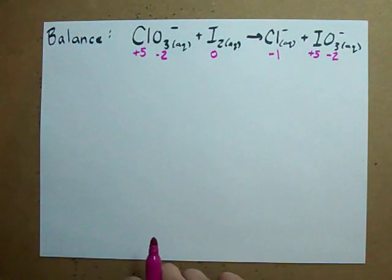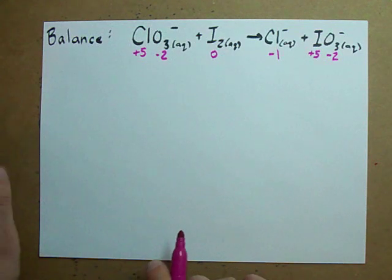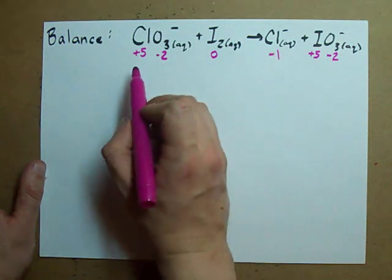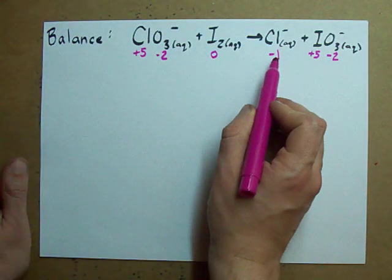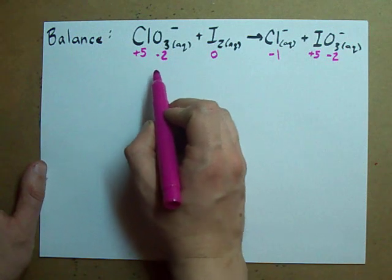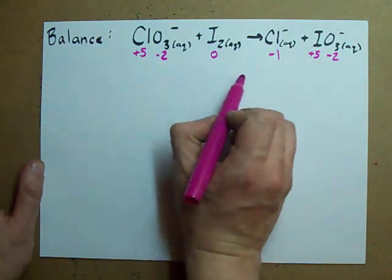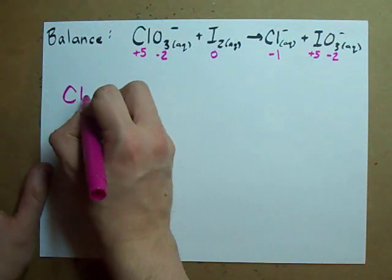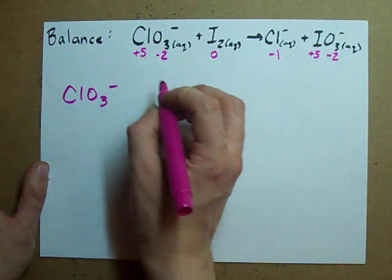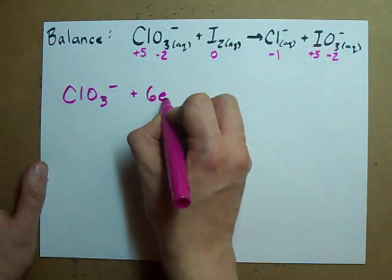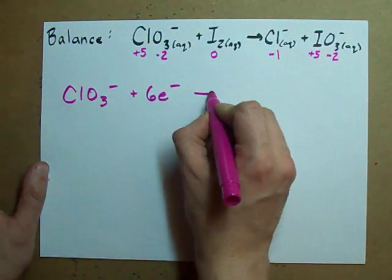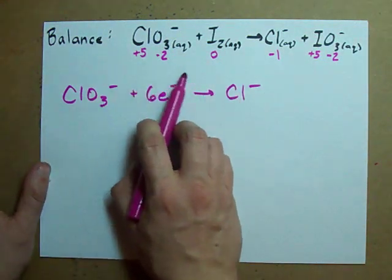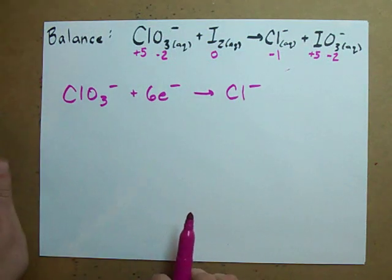What do you notice about how the oxidation numbers changed? Chlorine went from plus 5 to minus 1. It decreased by 6. How do you add 6 negatives? That's adding 6 electrons because electrons have a negative charge. Here's what I propose. ClO3- and 6 electrons combine to form chloride. Notice the oxidation number went down 6, so we had to add 6 electrons.